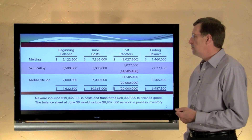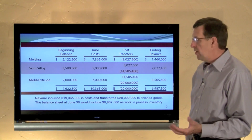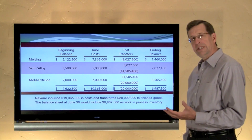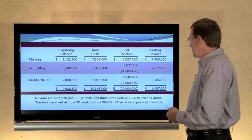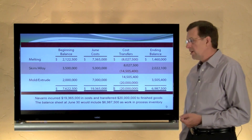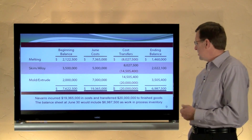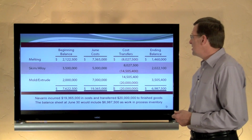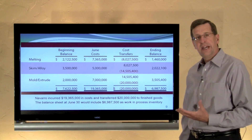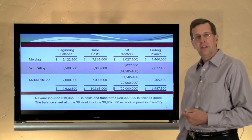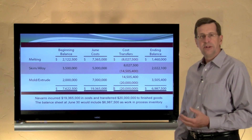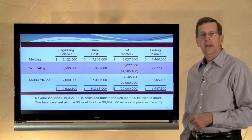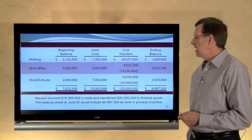It's very important not to lose sight of the big picture. All of this needs to be very logical: how much we had to start with — $7,622,000 — what we incurred — $19,365,000 — what we finished — $20 million — giving us a slight decrease in total work in process across all departments, ending at $6,987,500. Spend some time footing and cross-footing that schedule to satisfy yourself about the cost flow and that it's logical. Make sure you understand not only how to prepare a cost of production report, but how that data is being used to further the accounting process within the general ledger.